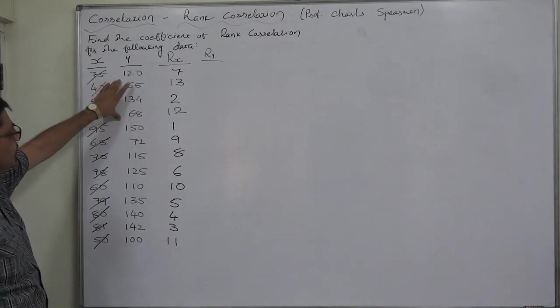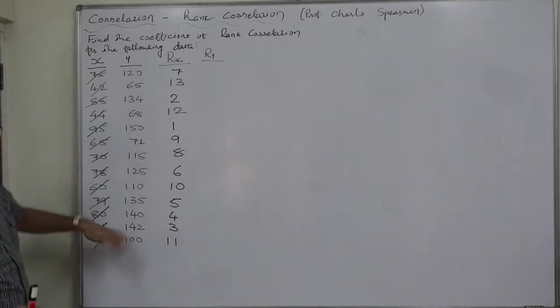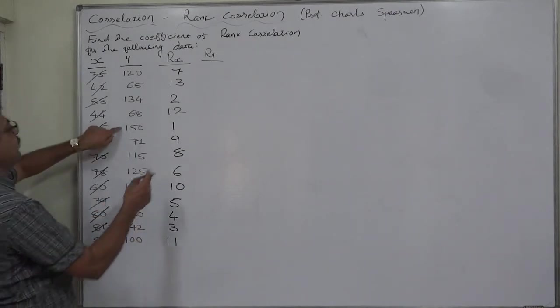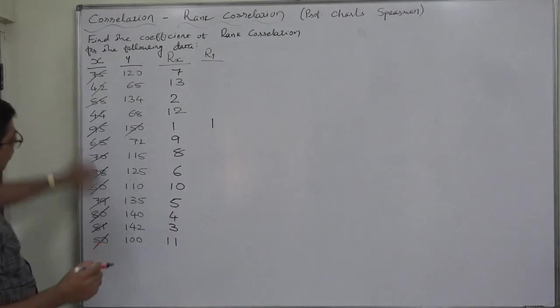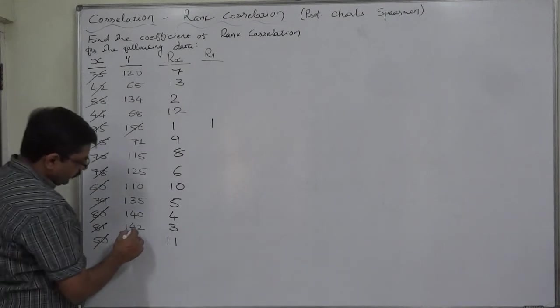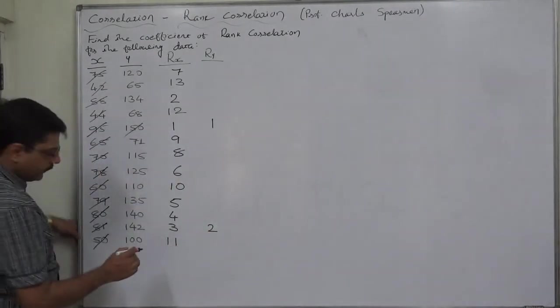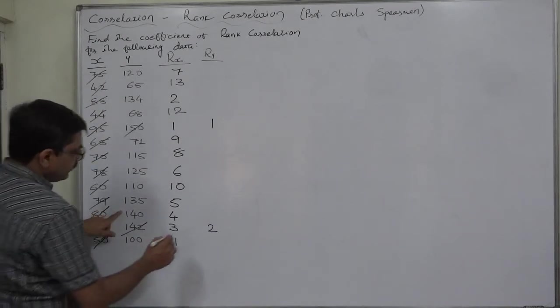Similarly, we are going to assign rank in case of Y. I was canceling the original values because it makes somewhat easier to consider only the outstanding values for the purpose of assigning rank. In this case, 135 or 140, 142. Yes. 150 is the highest value. So, we are going to assign rank 1 to 150. After 150, 149, 148, 147, blah, blah, blah are not there. So, 142 seems to be the second highest value. So, we are going to assign rank 2 to 142. There is no 141. So, 140 will be assigned rank 3.